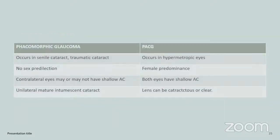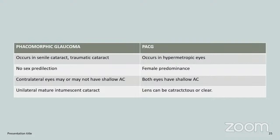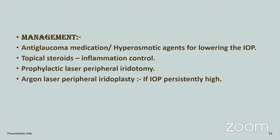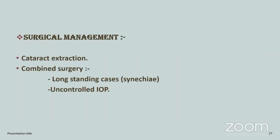Faculty emphasizes the key differentiating point: in phacomorphic glaucoma, the contralateral eye may not have a shallow AC, unlike primary angle-closure where both eyes are shallow. Management: anti-glaucoma medication and hyperosmotic agents to lower IOP, topical steroids, prophylactic laser peripheral iridectomy, and argon laser peripheral iridoplasty if IOP remains persistently high. Surgical management: cataract extraction, and combined surgery (cataract extraction plus trabeculectomy) if the case is long-standing beyond three to four weeks, with synechiae formation or uncontrolled IOP.